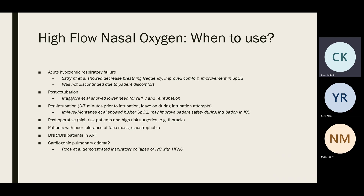Something rarely seen in practice is peri-intubation use: you can place a patient on high flow nasal cannula for three to seven minutes prior to intubation, and then leave the device in place during intubation attempts since it's a nasal cannula. A study showed that in ICU patients, compared with bag-mask ventilation, SpO2 with high flow cannula stayed close to 100% while it dropped into the low 90s with bag-mask ventilation, suggesting improved patient safety during ICU intubation.